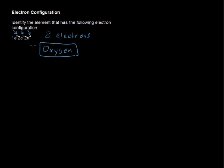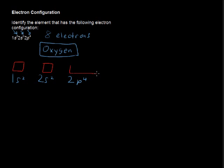Now to expand on that a little bit, you might also see this written as 1s2, 2s2, 2p4 with boxes above each subshell. I'm going to put three boxes above the 2p subshell. For the 1s2, you can only have two electrons in the 1s subshell, so one has to have a spin of up and one has a spin of down.